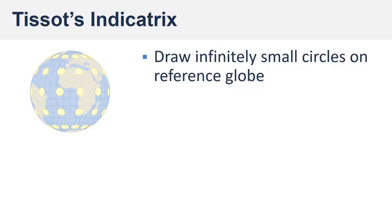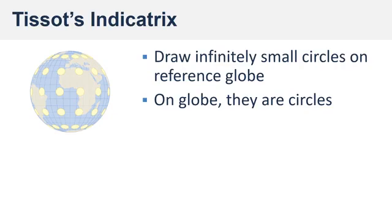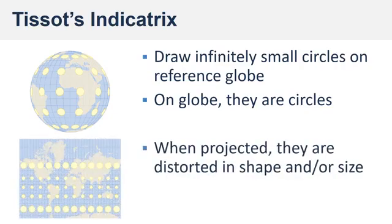Imagine drawing these infinitely small circles on your reference globe, which has been shrunk down from full size to the size needed for our principal scale. On the globe they're circles, but when they're projected they may or may not remain circles, and the sizes may have changed as well. So the size and/or the shape may be distorted.